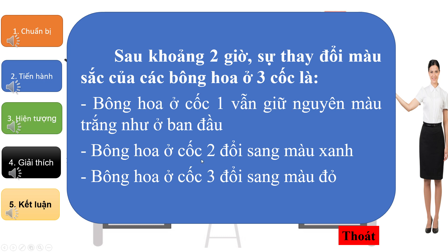Sau khoảng 2 giờ, sự thay đổi màu sắc của các bông hoa ở 3 cốc là: bông hoa ở cốc 1 vẫn giữ nguyên màu trắng như ban đầu, bông hoa ở cốc 2 đổi sang màu xanh, bông hoa ở cốc 3 đổi sang màu đỏ.